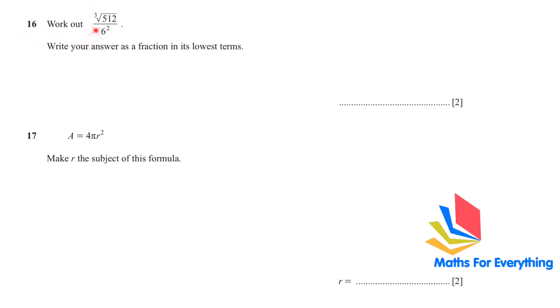Question 16: work out the cube root of 512 divided by 6 over 2. You just need to put the whole expression into the calculator correctly and you will get the answer 2/9.